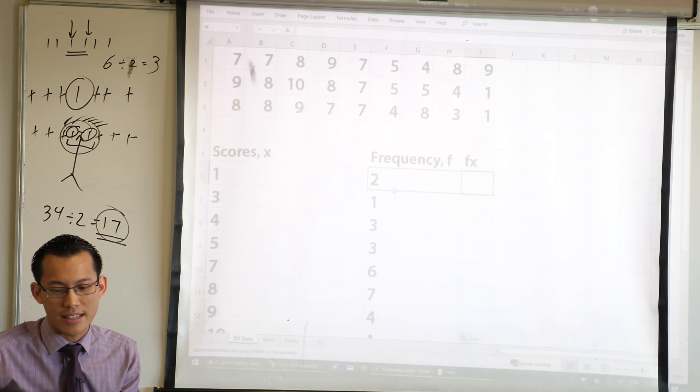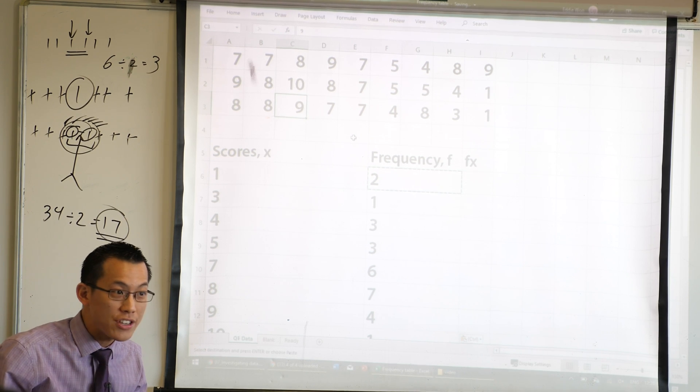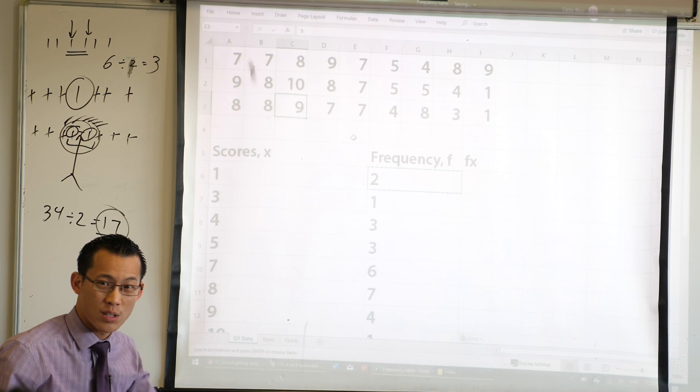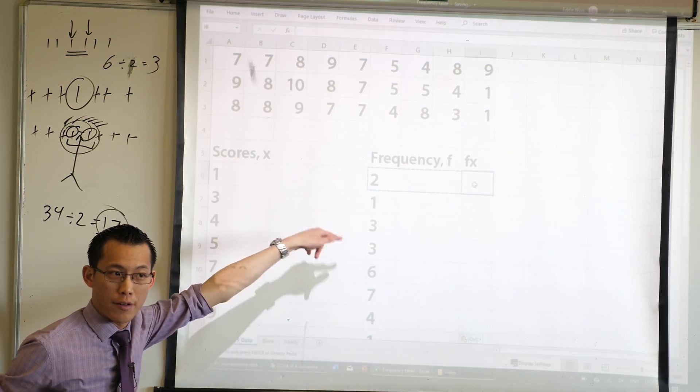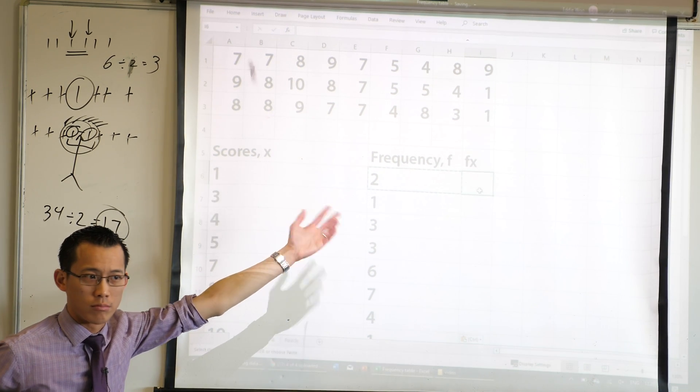Isn't that a lot easier than going through manually and going through the count? It's also a lot more accurate. Once I've got my x column and my frequency column, what do I do on this third column? Why is it called fx?